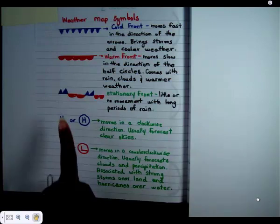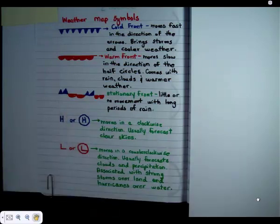A stationary front symbol has a mixture of the cold front and the warm front symbols, and a stationary front has little or no movement, and the area will experience long periods of rain.